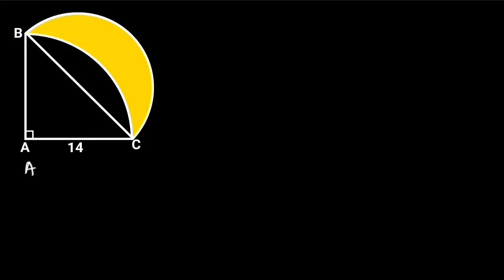The area of the shaded portion is equal to the area of the semicircle plus the area of triangle ABC, minus the area of the quarter circle.